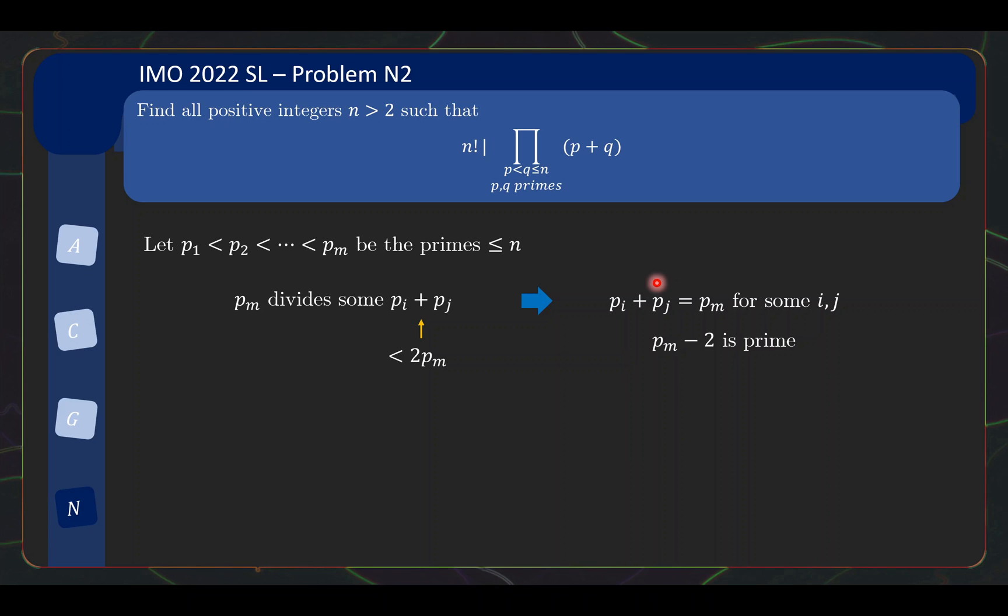The natural question is, can I repeat this line of reasoning again and roll downwards? Not a problem, because p_m - 2 appears in n!. So p_m - 2 again divides some factor on the right, so it divides some p_k + p_l. Once again, if you look at how big this sum can be, at most p_m and at most p_m - 2, so this thing is less than or equal to 2p_m - 2. In this case, there are actually two scenarios now on what the multiple can be. It can either be exactly p_m - 2 itself, or it can be twice p_m - 2.